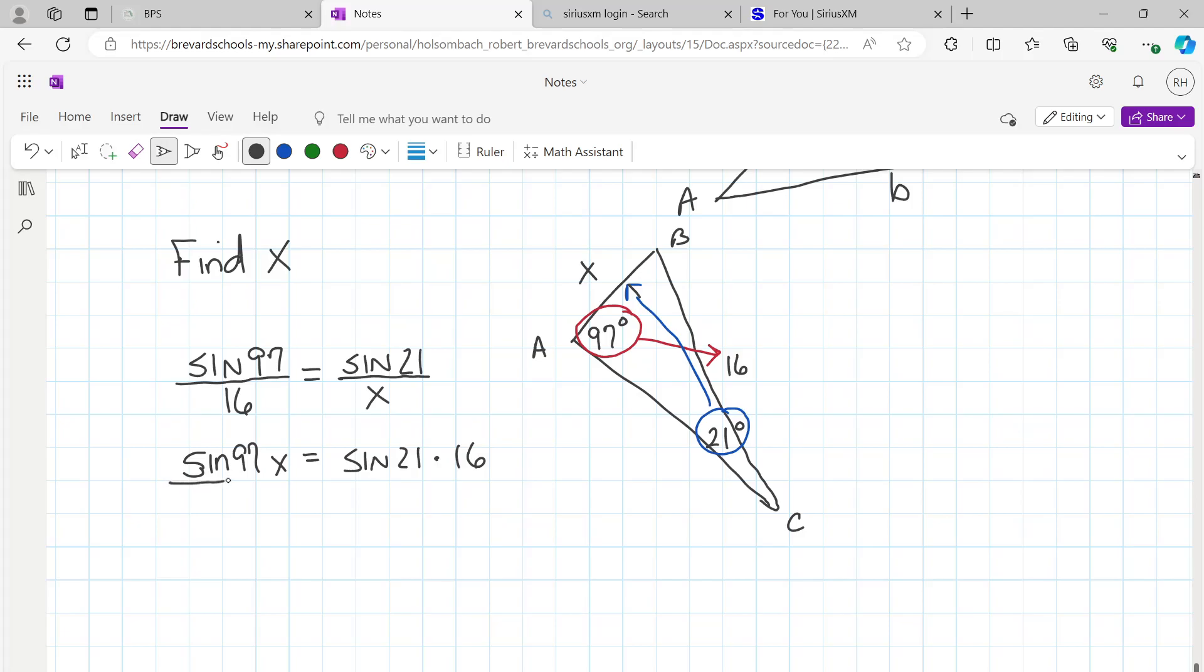So to solve for x, now we're going to divide both sides by sine 97. The sine 97s cancel, so x equals, in your calculator type in 21 sine times 16, make sure you hit equals. Then while that 5.7 is on your screen, push divided by 97 sine and hit equals again, and you should get 5.8. We were asked to round to the nearest tenth.